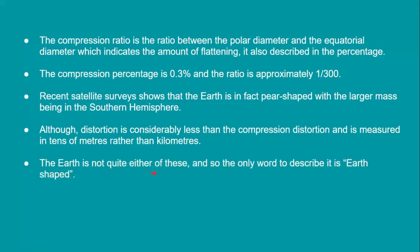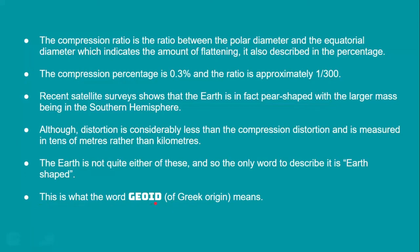Earth is not quite either of these shapes, and so the only word to describe it is 'earth-shaped.' Earth is not a perfect sphere, nor exactly pear-shaped, so we can describe its shape as 'geoid.' This is what the word 'geoid' of Greek origin means.